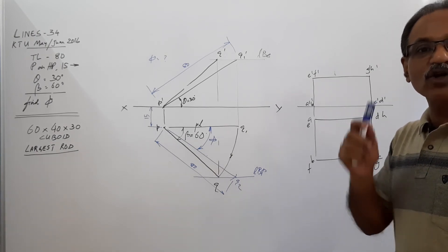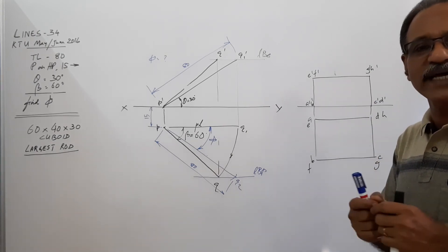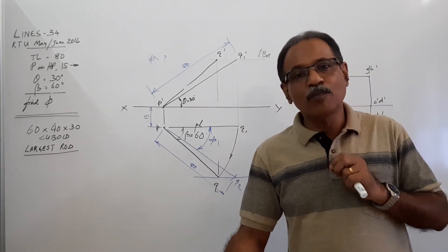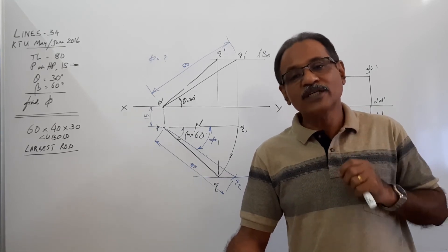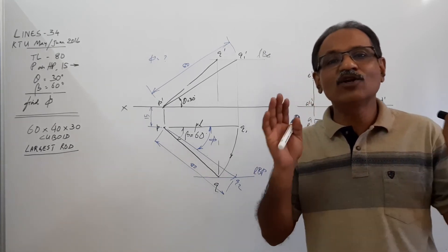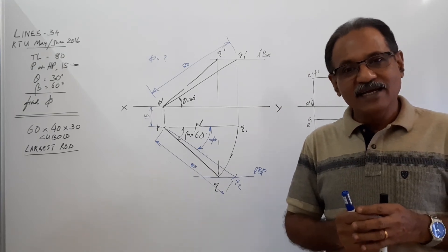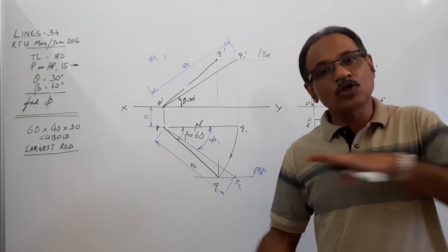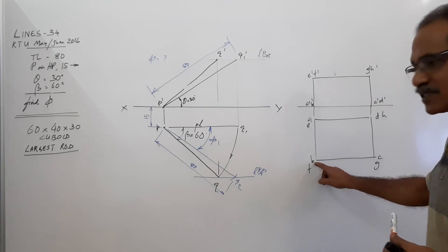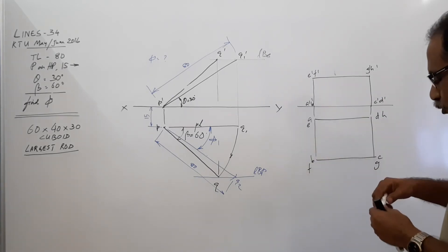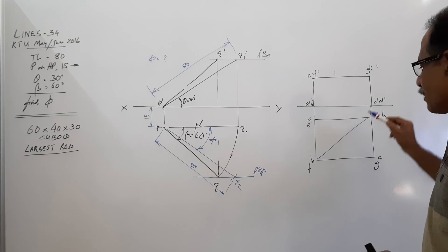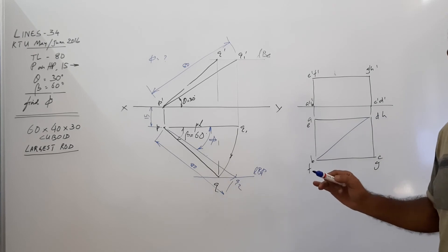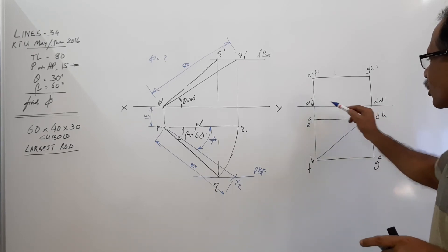Inside this box, a rod is kept. It is the longest rod that can be kept. It is a rod connecting a corner of the bottom rectangle and the opposite corner of the top rectangle. That is the longest rod that can be kept. I repeat, a line connecting corner of the bottom rectangle and the opposite corner of the top rectangle. Say, if you take B as the bottom corner, H is the top corner.